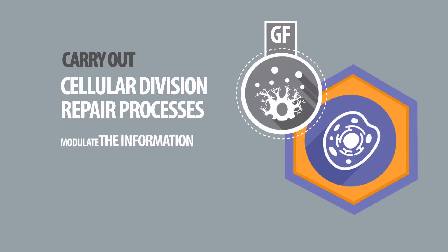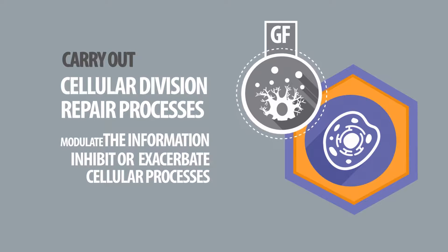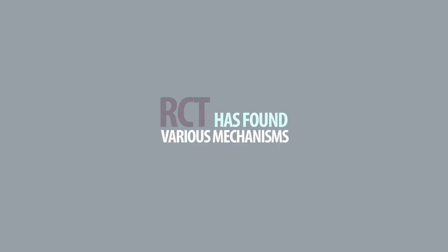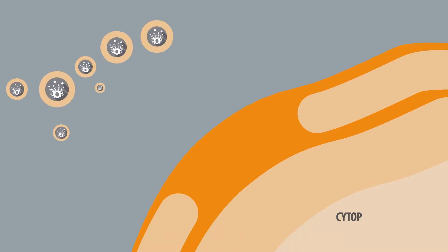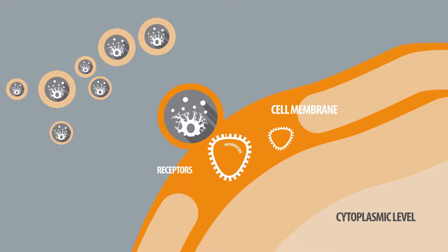RCT has found various mechanisms of action for GFs where the molecule binds to a receptor already inserted in the cell membrane and the desired information is transmitted. The receptor only receives information from a particular GF through a transduction mechanism. When the information is received, the receptor generates numerous responses at the cytoplasmatic level inside the cell.